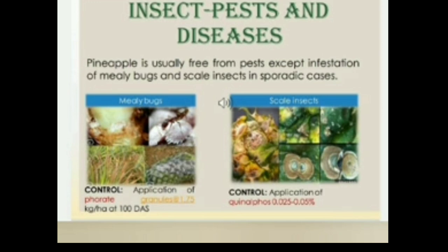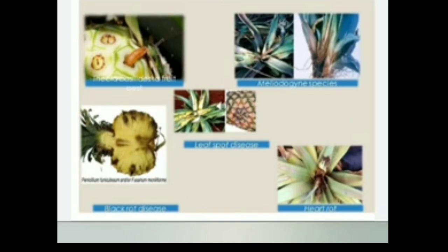Insect pests and diseases: Pineapple is usually free from pests except infestation of mealybugs and scale insects in sporadic cases. Mealybugs can be controlled by the application of Phorate granules at the rate of 1.75 kg per hectare. Scale insects can be controlled by the application of Quinalphos 0.025 to 0.05%. Some diseases seen in pineapples include: a disease caused by Thielaviopsis causing fruit rot, Meloidogyne species (nematodes), leaf spot disease, black rot disease, and heart rot disease.